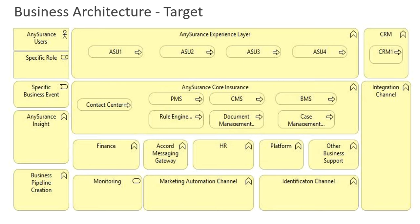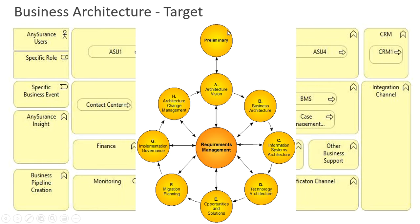TOGAF says you start with the preliminary phase — understanding why you want to reach from the baseline to the target. Then you have an Architecture Vision, followed by Phase B for business architecture, Phase C for information architecture broken into data and application architecture, and Phase D for technology architecture. After that you find opportunities and solutions, do migration planning to implement what was found in B, C, and D, create a roadmap, and establish governance and architecture change management.